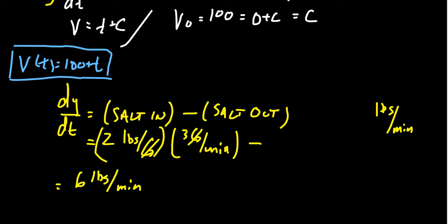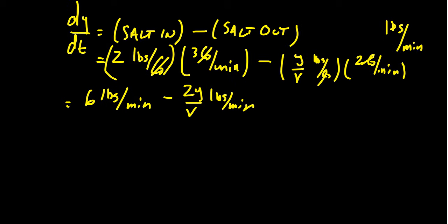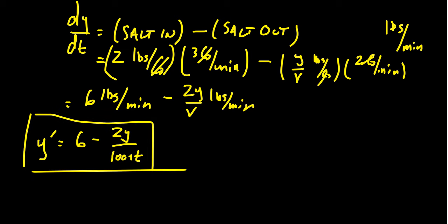For the salt exiting the system, we have a concentration Y over V — pounds per gallon — times 2 gallons per minute exiting. The gallons cancel, giving minus 2Y over V pounds per minute. Simplifying, we get that Y prime equals 6 minus 2Y over (100 + T). This is the differential equation set up for the rate of salt entering and exiting the system. If we can solve for Y, that gives us the function we want.